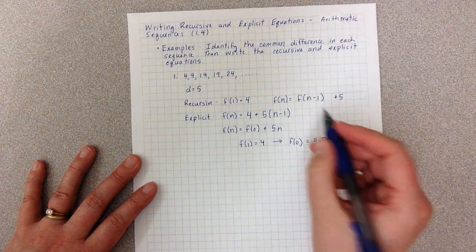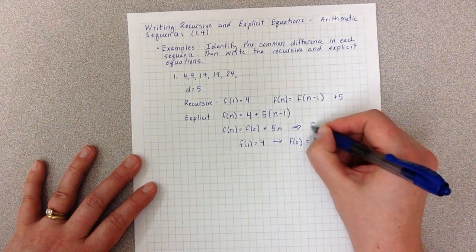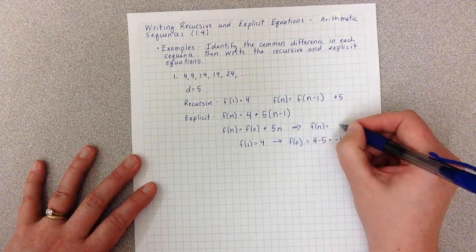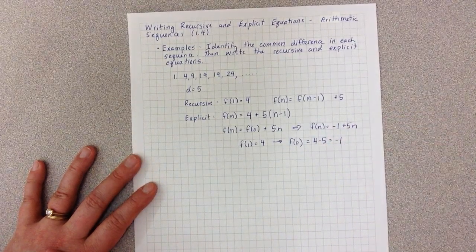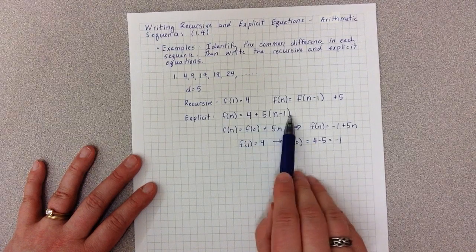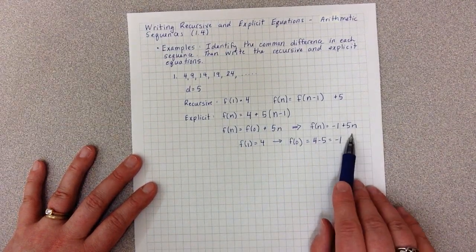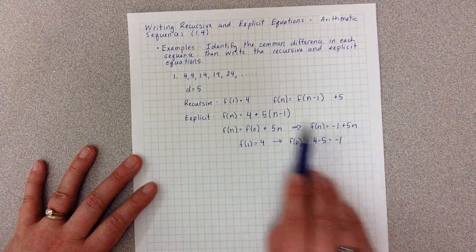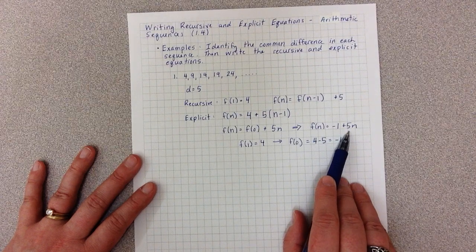Which now means that I can write this as F(N) = -1 + 5N. If I distribute the five here in this first way of doing it and simplify, I will get this equation. They are what we call equivalent - they give us the same answers even though they look slightly different.